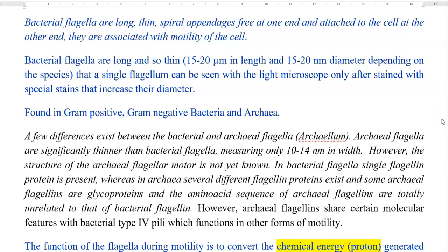Next, we look at the points related to flagellin protein and its differences. In bacterial flagella, a single flagellin protein is present, whereas in archaea, different types of flagellin proteins can coexist. Some archaeal flagellins are glycoproteins in nature, and the amino acid sequence of these flagellin proteins are totally unrelated compared to that of the bacterial flagellin. Interestingly, archaeal flagellin share certain molecular features with that of the bacterial type 4 pili, which are commonly involved in the motility of bacteria.